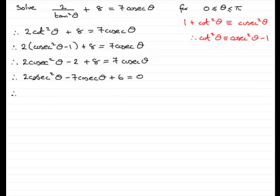And I would try to see if I could factorize this. And indeed, this one does factorize. Let's just show you. 2 cosec squared theta. I could have 2 cosec theta here and a cosec theta there. That will multiply together to give 2 cosec squared theta. Look for two numbers that multiply together to give plus 6. What's that going to be? Minus 3 and minus 2.